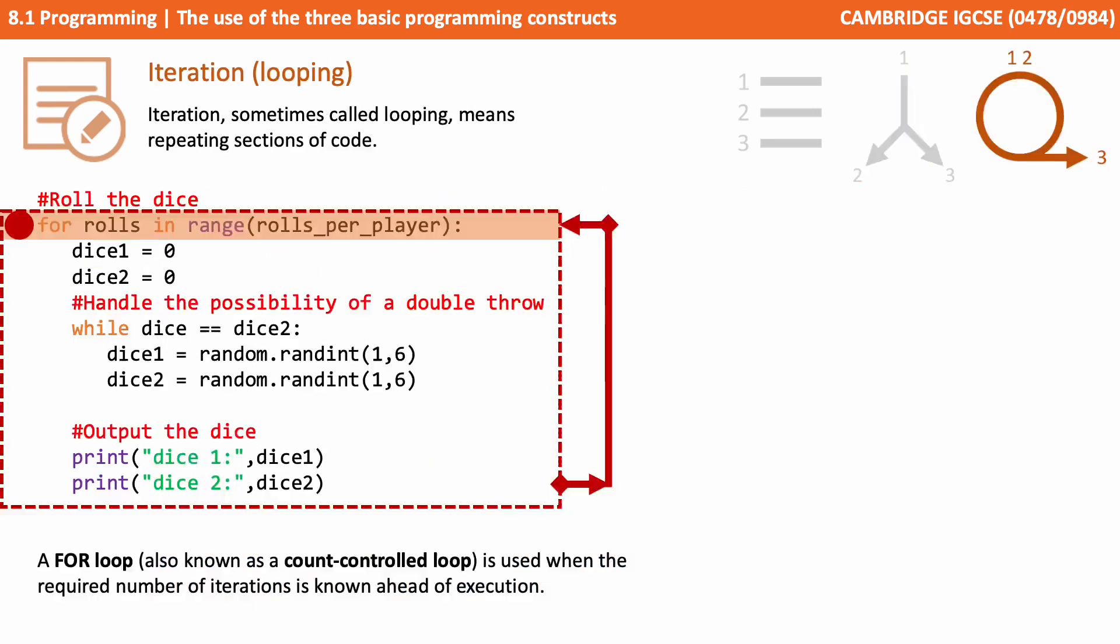The final construct we need to understand is called iteration or looping, and there's a few forms this can take and it's important you understand the differences between them. But in essence iteration, sometimes called looping, means repeating sections of code. What we're looking at here is a for loop. This is also known as a count-controlled loop, and it's used when the required number of iterations is known.